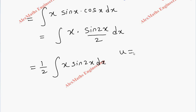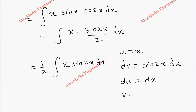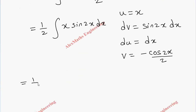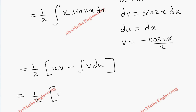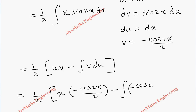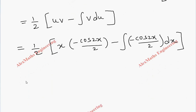We apply integration by parts again. Take u = x and dv = sin 2x dx. Then du = dx and v = -cos 2x/2. Substituting into uv - ∫v du: q = 1/2 · [x · (-cos 2x/2) - ∫(-cos 2x/2) dx].